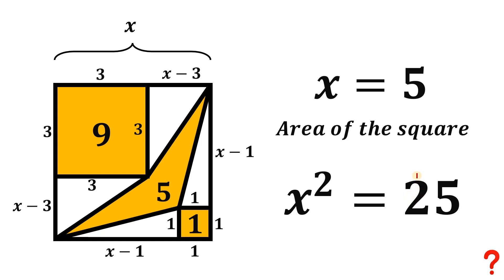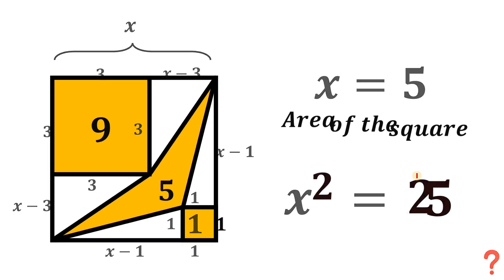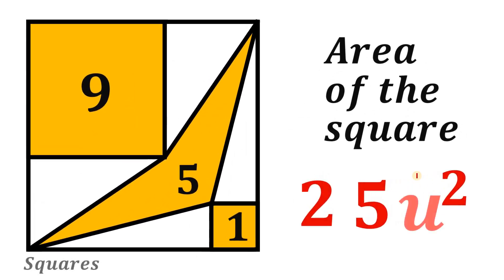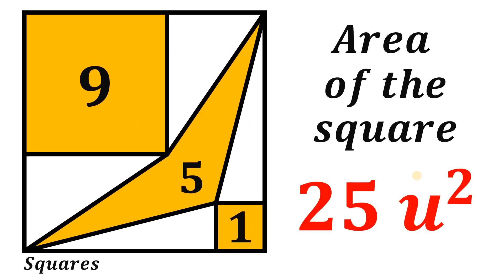So the area of the big square is 25 square units — and that is our answer to this question. Given this figure, the area of the big square is 25 square units. And as always, we are done.